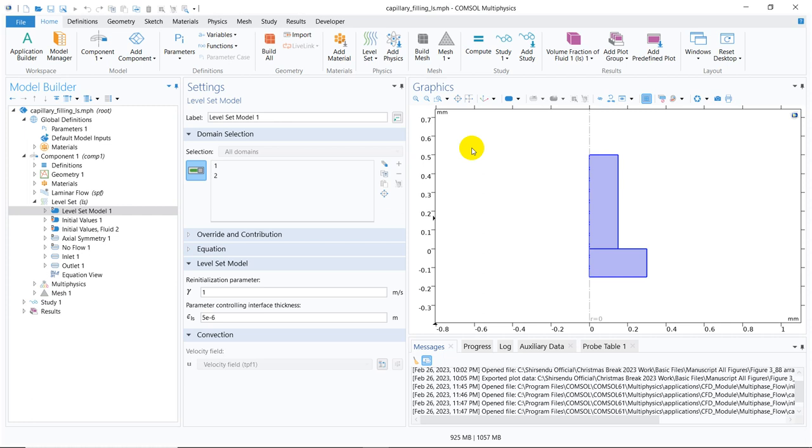In this video, we are going to talk about two important parameters which are available for both level set and phase field model in COMSOL Multiphysics. Today we will be talking about the level set model and in level set, those two parameters are reinitialization parameter and the parameter controlling interface thickness.